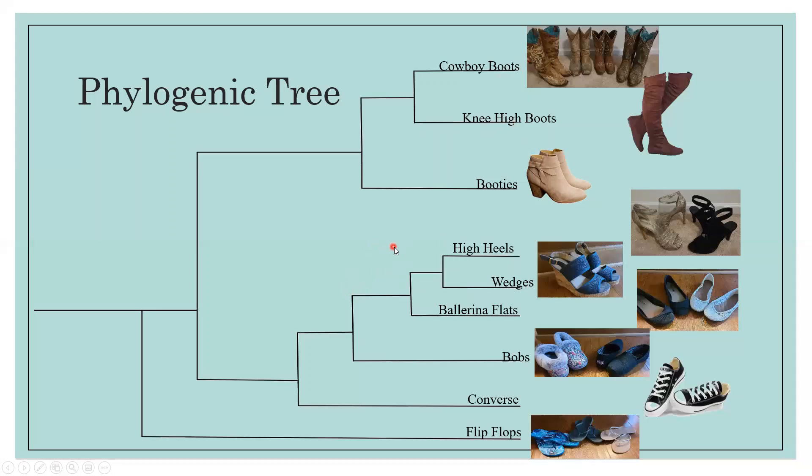And then would be the internal nodes, which as you can guess are the internal meaning inside of the tree, so they're the place before each branch splits and they represent a common ancestor.